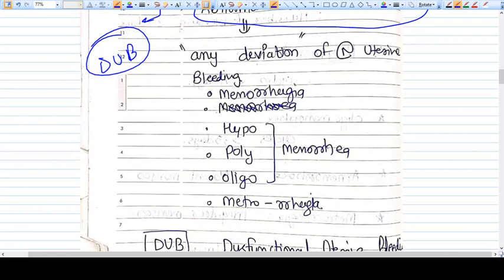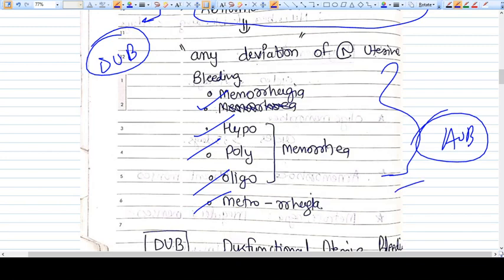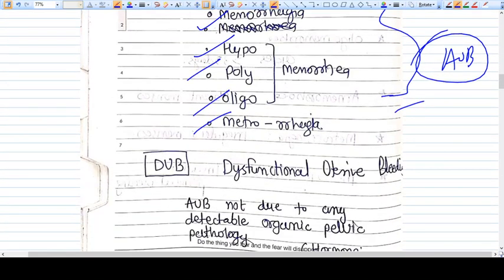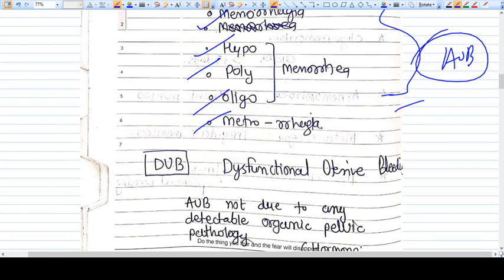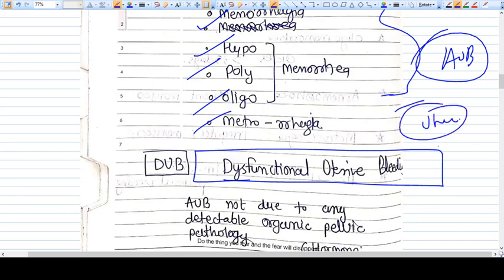We have discussed menorrhagia, hypomenorrhagia, polymenorrhagia, oligomenorrhagia, metromenorrhagia - all these things come under AUB. Now, what is DUB? DUB is dysfunctional uterine bleeding.